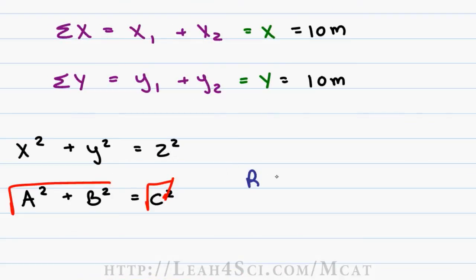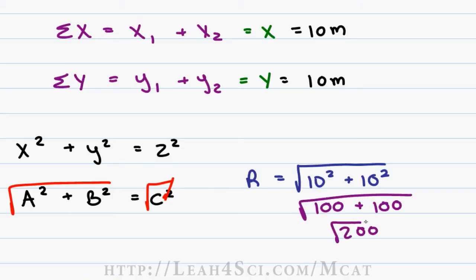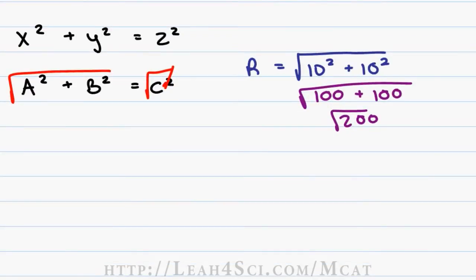Plugging our numbers into this equation, we have the resultant is equal to the square root of x squared or 10 squared plus y squared which is 10 squared again. 10 squared is 100 plus 100 is equal to the square root of 200. Remember on the MCAT, you cannot use a calculator. So we want to break this up into something that we can recognize. I don't know the square root of 200, but the square root of 200 is equal to the square root of 2 times the square root of 100. The square root of 2 is something you should memorize and that is equal to 1.4. The square root of 100 is equal to 10, and so our answer is 1.4 times 10. We'll use the times 10 trick moving our decimal over one space to the right, and that gives me an answer of 14 meters total as the crow flies or resultant of 14 meters.